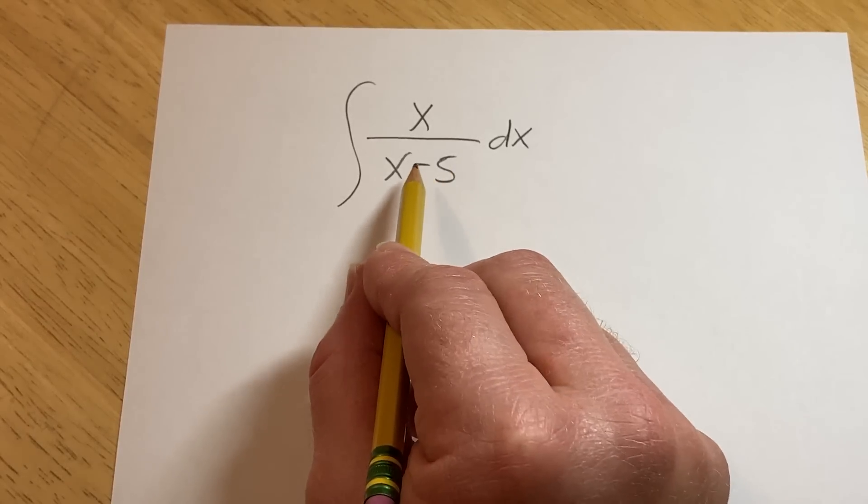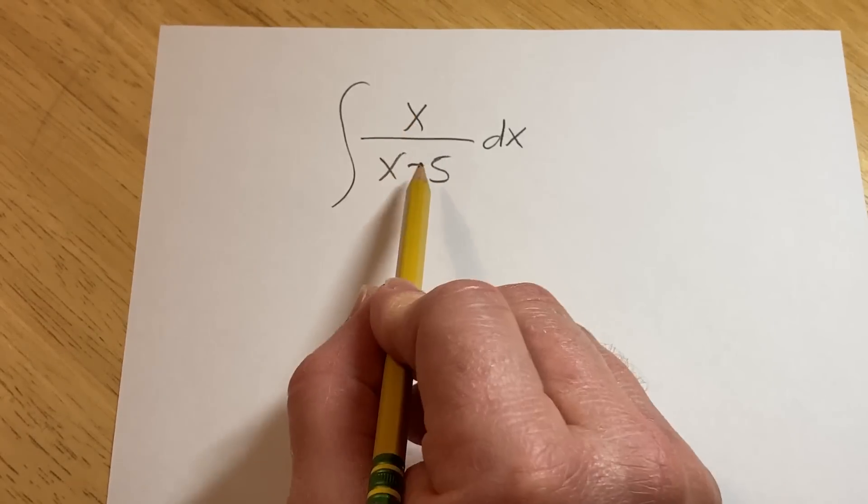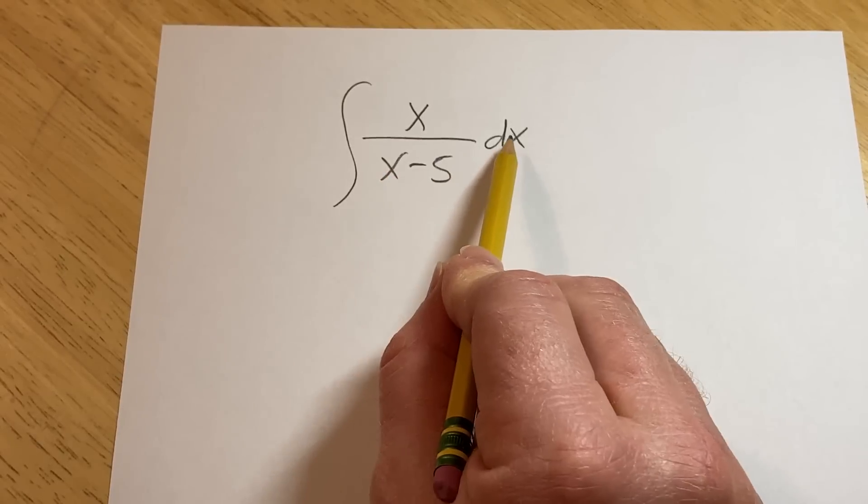Hi, in this video we're going to work out this indefinite integral: x over x minus 5 with respect to x.